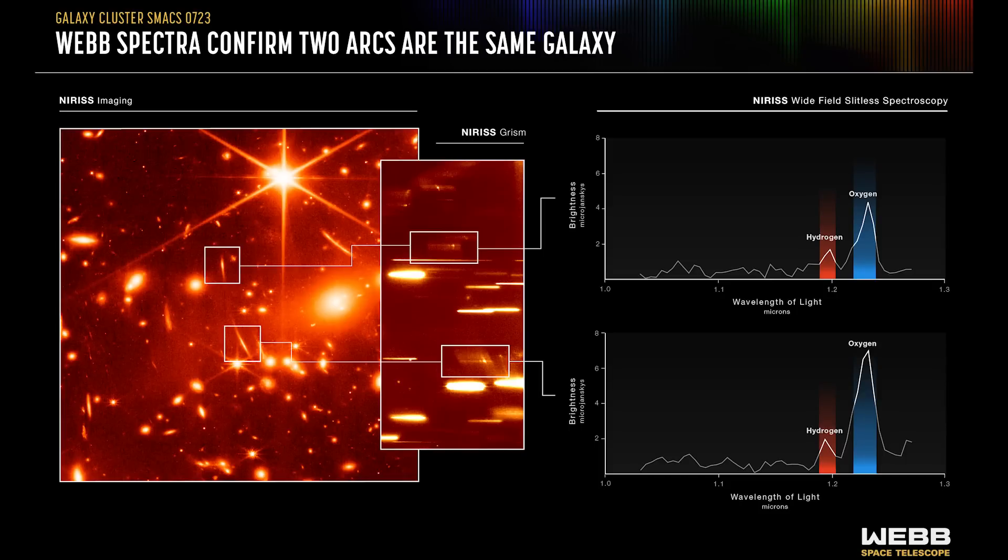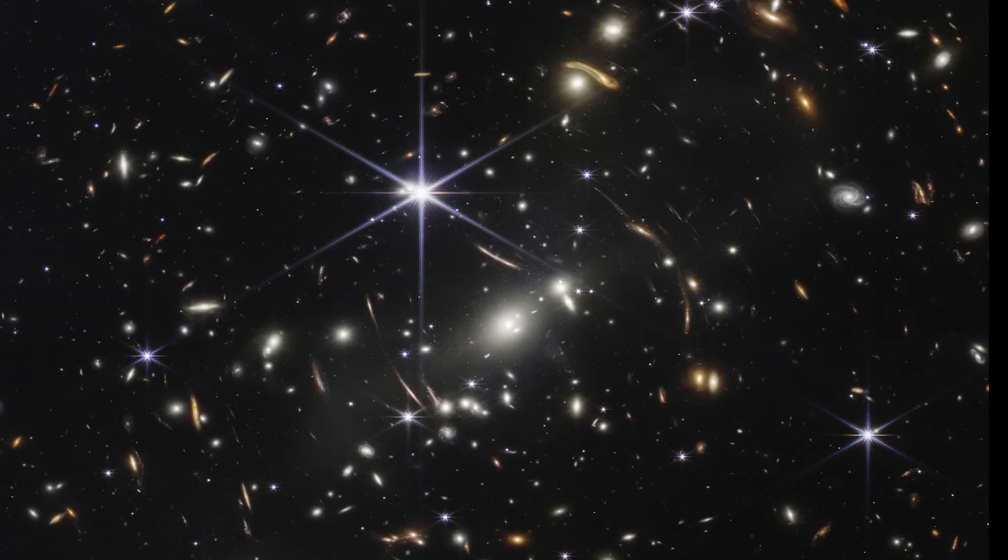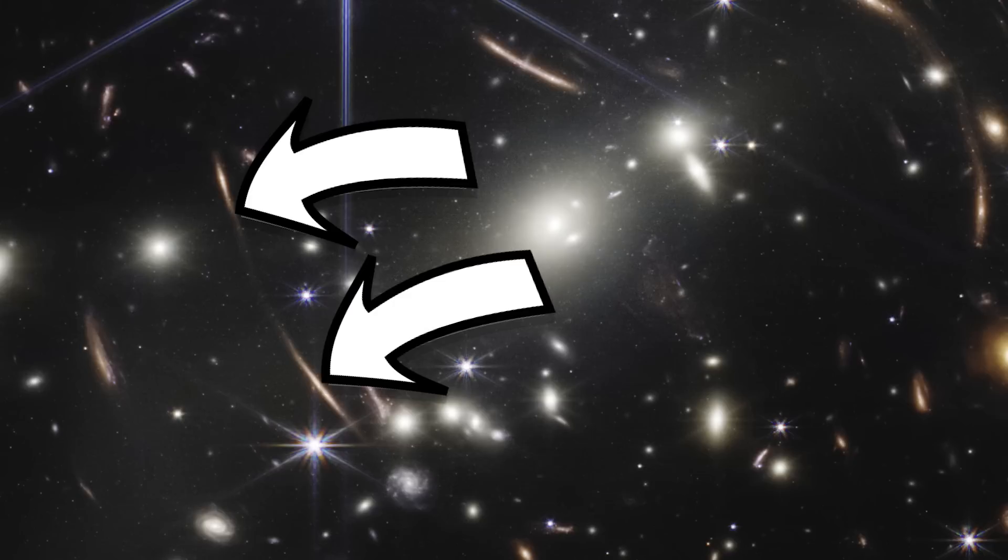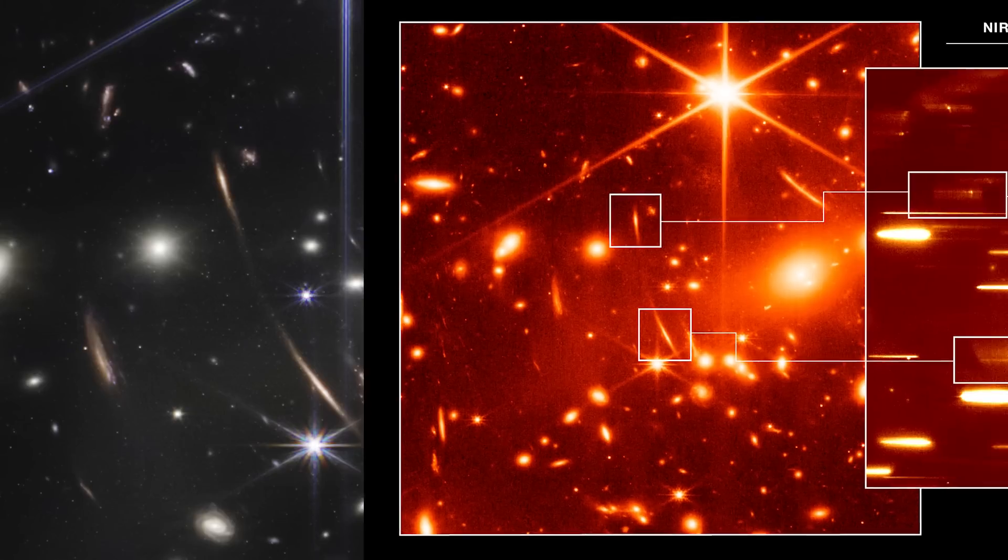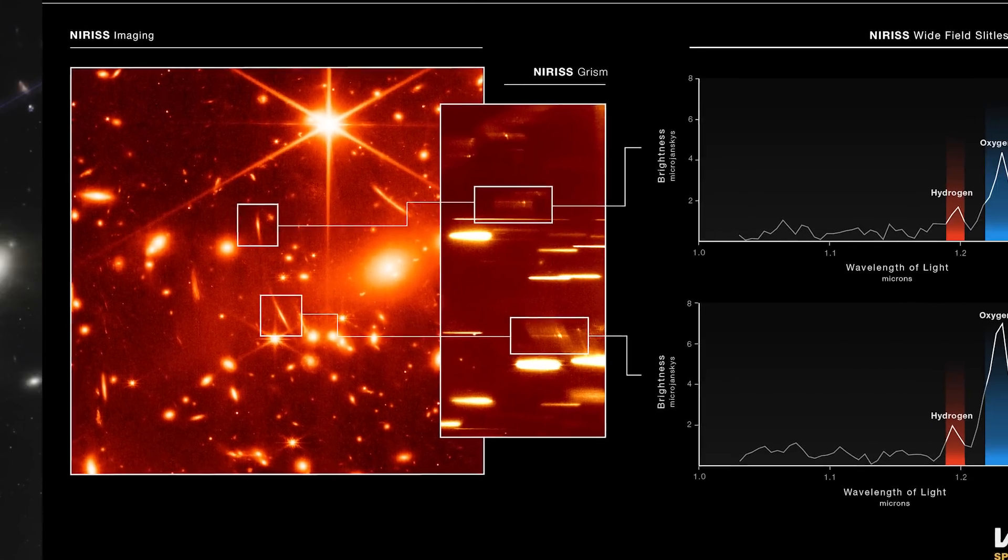First of all, JWST pointed its wide field slitless spectrograph at the galaxy cluster, and it confirmed what we'd all guessed anyway, that the extreme gravitational lensing is showing the same objects multiple times. Let's zoom in here. We see these two smudges of galaxies, and we all assumed it was the same galaxy repeating just by how it looked. We now know this is totally true, it's been confirmed, because the spectra of the two smudges are exactly the same.